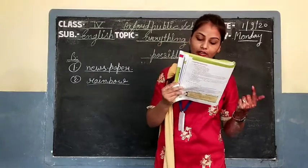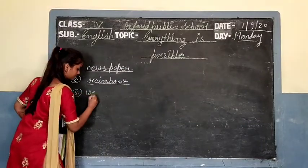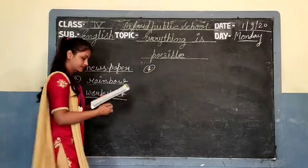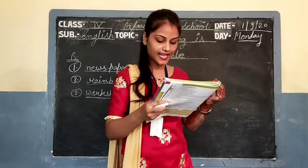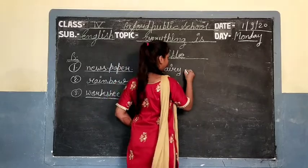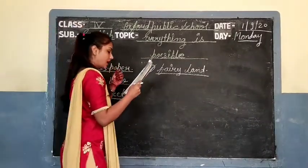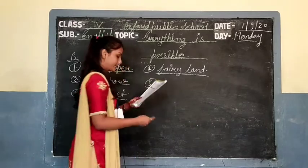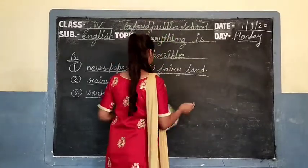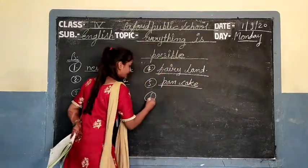Third: 'the ___ on grammar was very easy' — third में worksheet. Fourth: 'I visited ___ in my dream last night' — यहाँ हो जाएगा fairyland. I visited fairyland in my dream last night. Fifth: 'my mother baked a delicious ___ for me' — यहाँ हो जाएगा pancake.